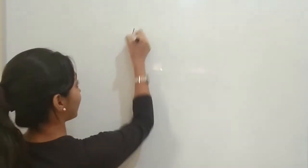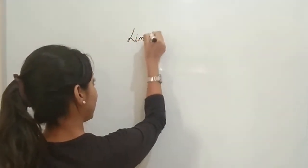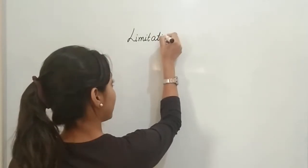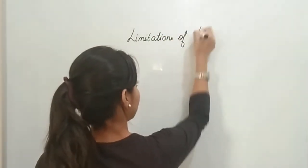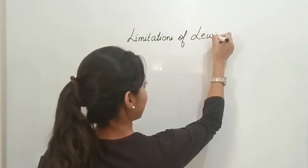Hey guys, what's up? So having discussed what were Lewis dot structures, what was Cossel Lewis approach to chemical bonding, now we are going to do the limitations, the sad points about this Lewis dot theory. So today the topic will be limitations of Lewis theory.